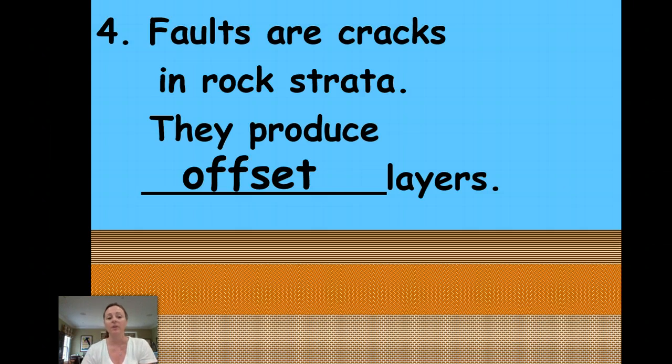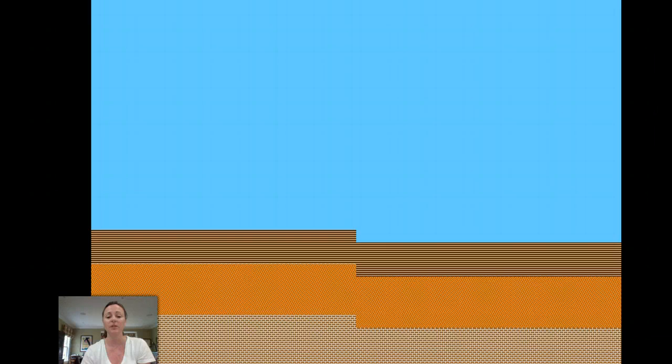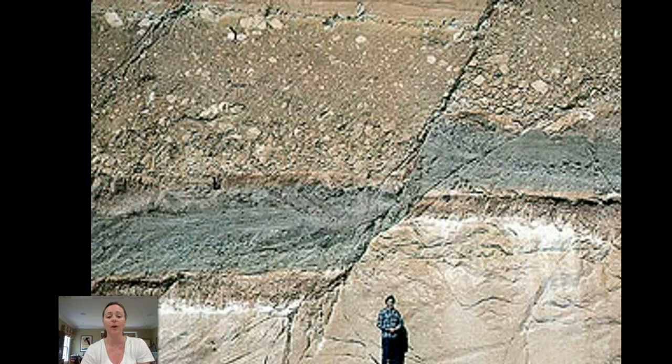The fourth thing we look at are faults, cracks in the rock layer, and they produce offset layers. So if you look at this diagram you see a line going right down the center. This is the fault and that tells us that the rock layers were formed before the fault occurred.